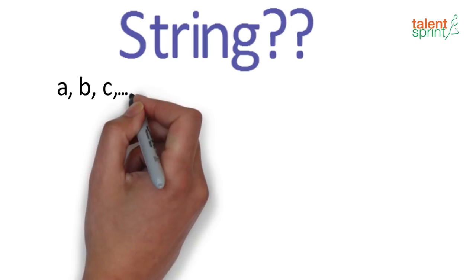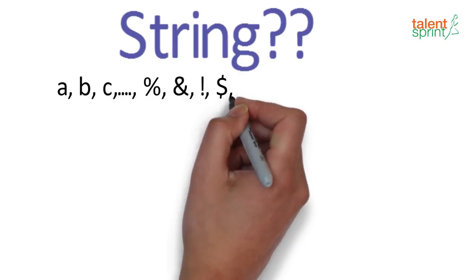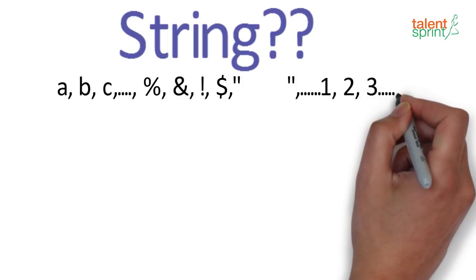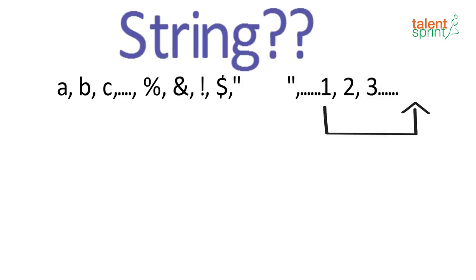A string, simply put, is a sequence of alphanumeric characters. This character set could include anything ranging from numbers and alphabets to delimiters or even spaces.